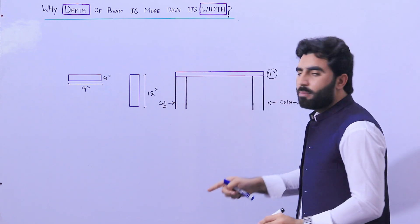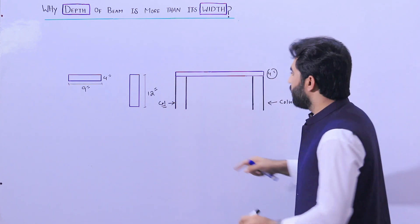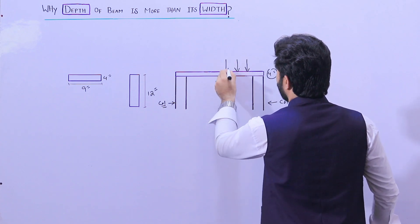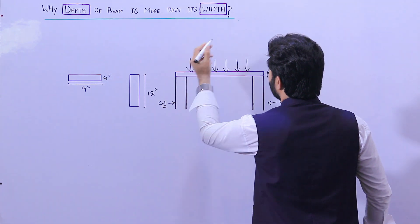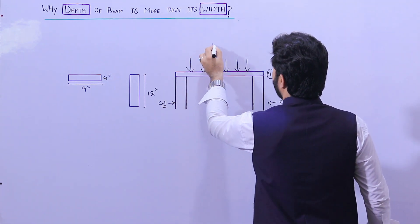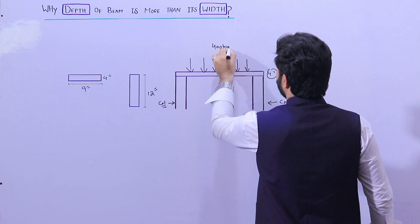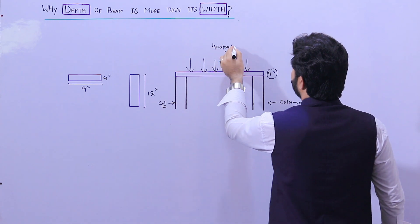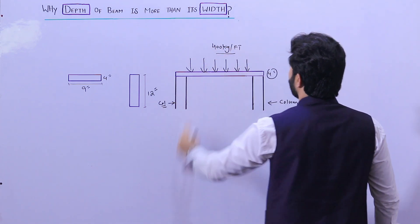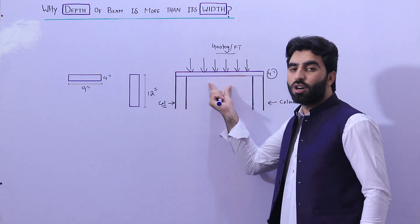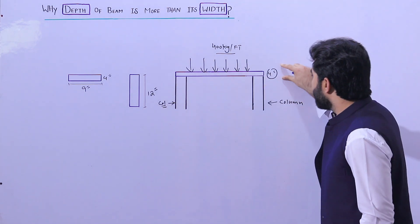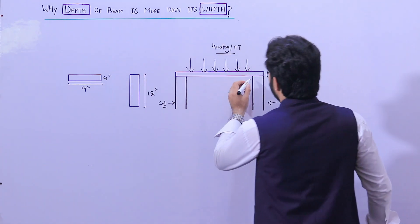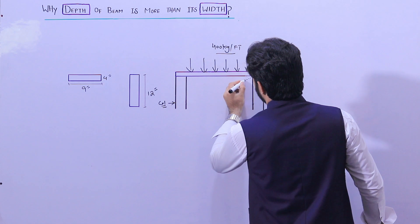When the load comes — the structural load — on top of this beam, suppose the structural load is 400 kg per feet. This is the structural load of the building applied on top of this beam, which has a thickness or depth of 4 inches, as you can see clearly.